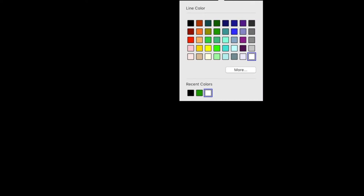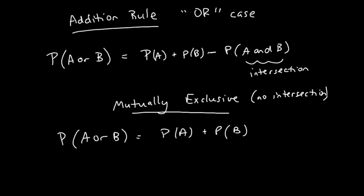This is a topic that a lot of students have an issue with in statistics, especially when they get to probability. This is called the addition rule — it's the 'or' case, the probability of A or B. That means either A can happen, or B can happen, or both. You have two scenarios: the first case when you have an intersection between the two events, and the second case called mutually exclusive, when there is no intersection.